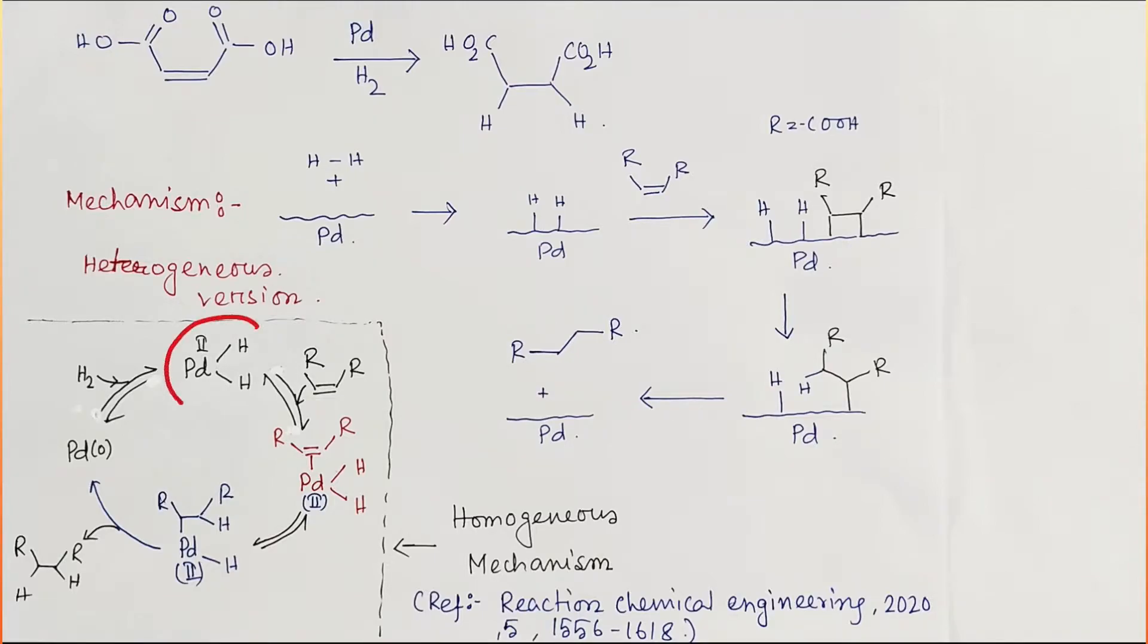In this case, palladium 0 is our starting material. It reacts with hydrogen to produce palladium 2+. In this case, you can see palladium is getting oxidized and hydrogen is getting reduced. It means you may consider it is a hydride-type formation.